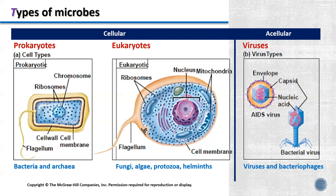The last group is the acellular type. Viruses are noncellular entities. They consist of a nucleic acid core — like DNA or RNA — which is surrounded by a protein coat. Although viruses are classified as microorganisms, they are actually not considered living organisms. Viruses cannot reproduce outside a host cell and cannot metabolize on their own. Viruses often infect prokaryotic and eukaryotic cells, causing diseases.